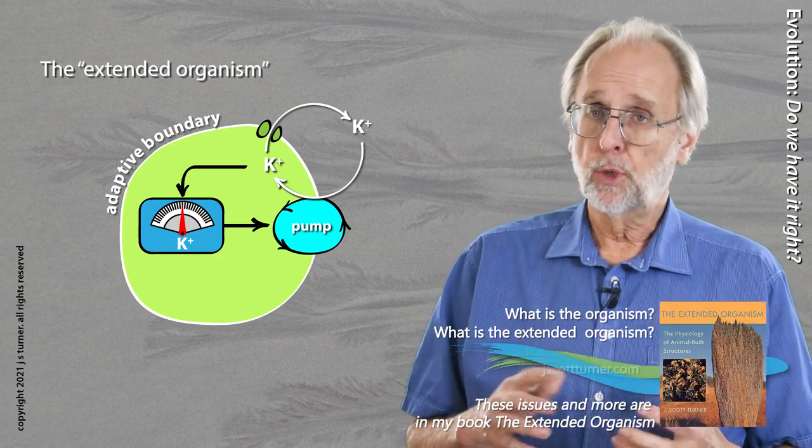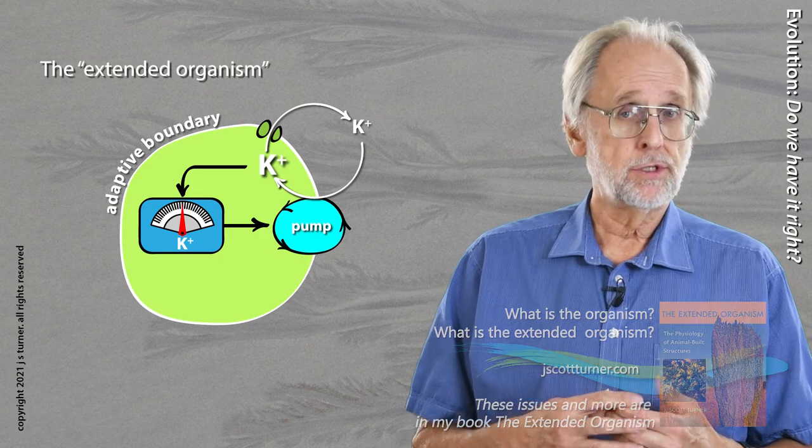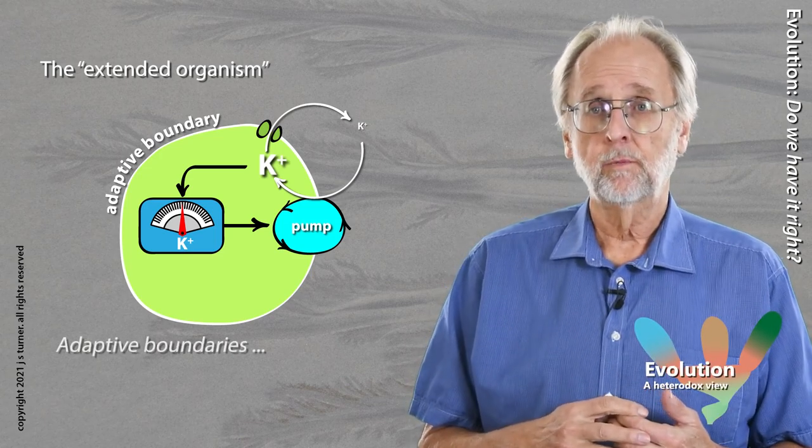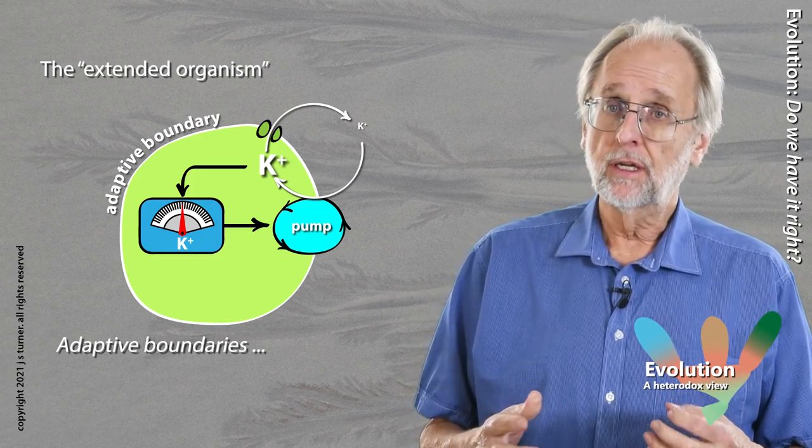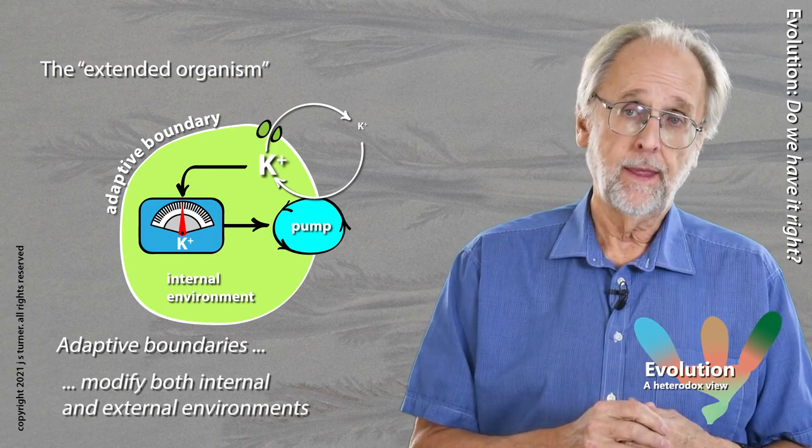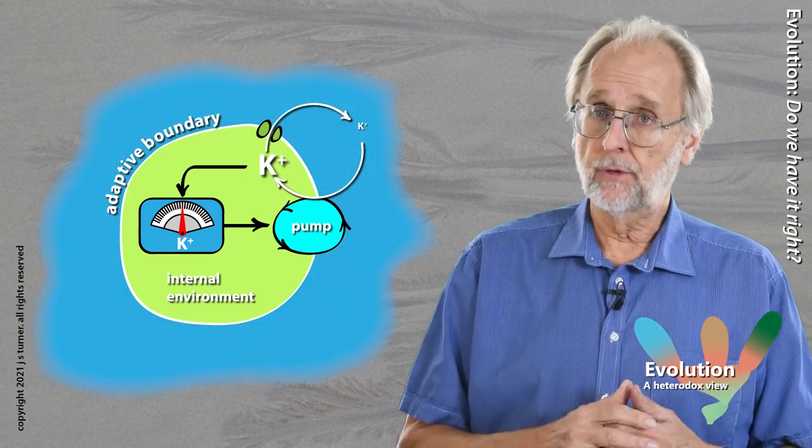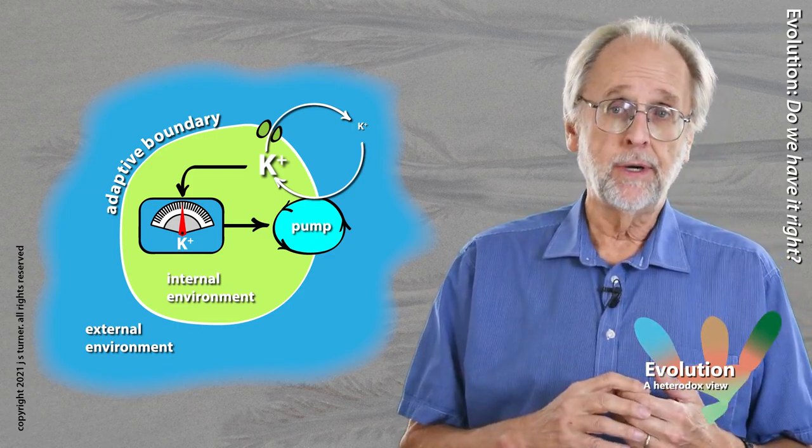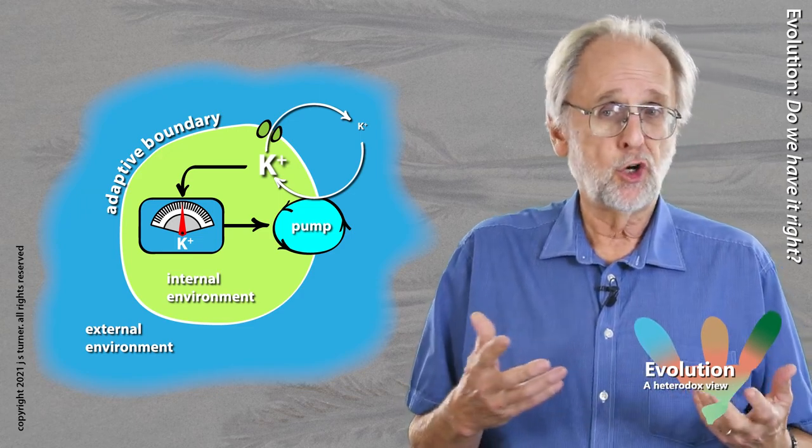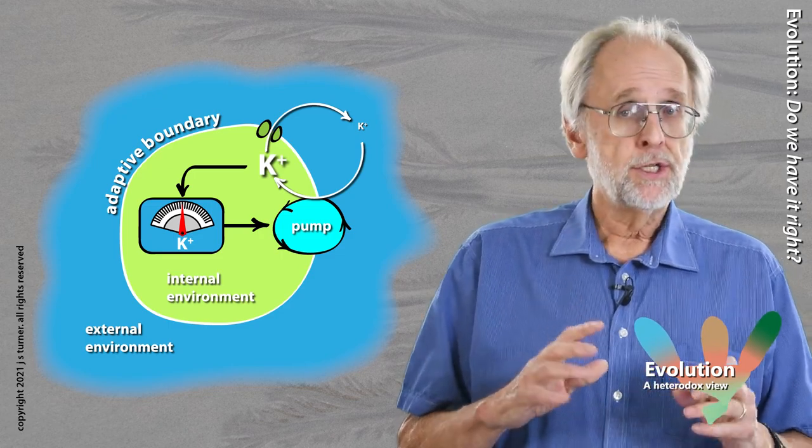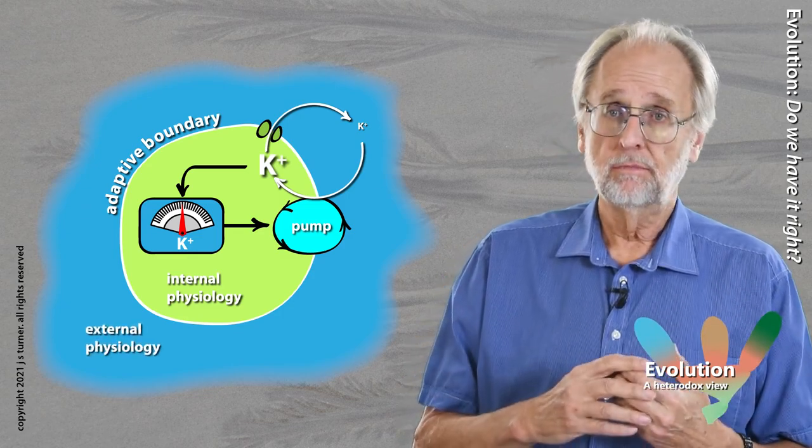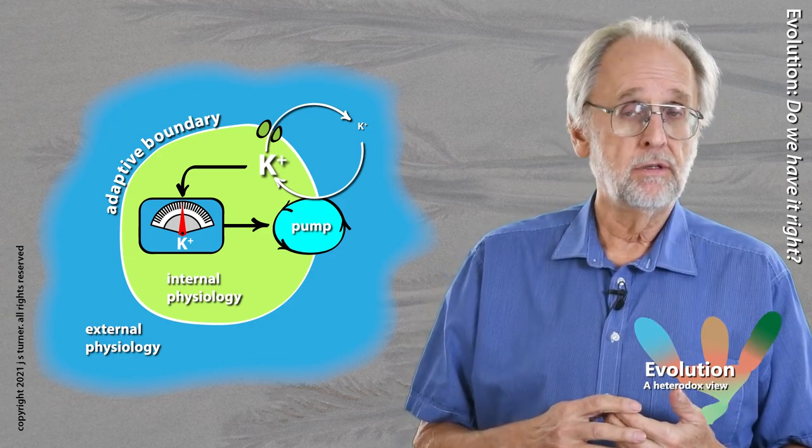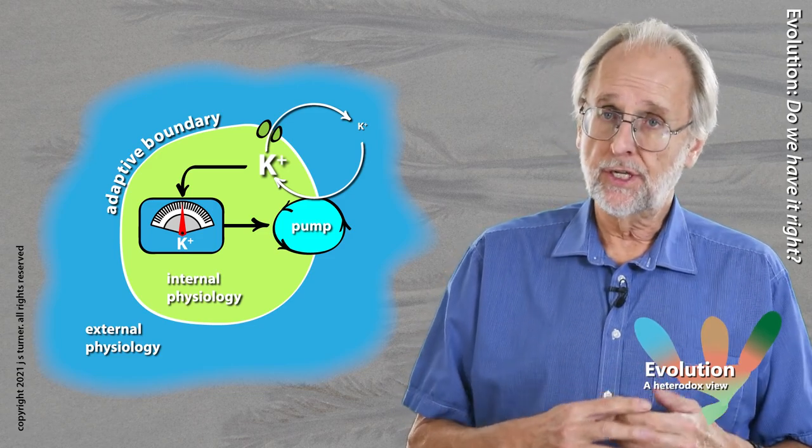Any time a membrane pump transports a potassium ion across the membrane into the cell, increasing its concentration there, it's taking a potassium ion from outside of the cell, decreasing its concentration there. That's simple conservation of mass. So the adaptive boundary of the cell membrane is certainly affecting the environment contained within the boundary, the cell's internal environment, but it's also affecting the environment outside the boundary. In other words, the physiology mediated by the adaptive boundary affects the environment on both sides of the membrane. And this leads us to a somewhat startling conclusion. Physiology is not just something that happens inside the cell. It extends to the environment outside the cell as well. Any modification of the cell's internal environment is reflected in an opposite modification of its external environment. In short, the physiology of the cell is extended.